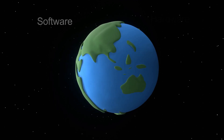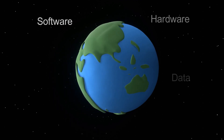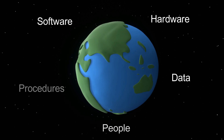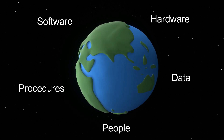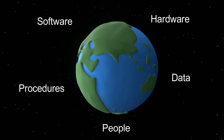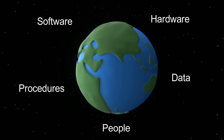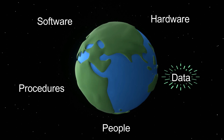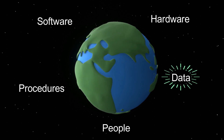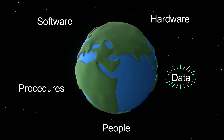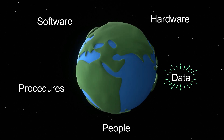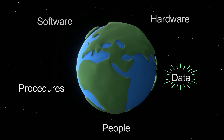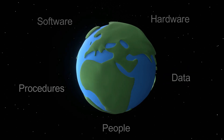Those are software, hardware, data, people, and procedures. Among these five components, the most critical component is data. In all GIS projects, the highest amount of time is consumed by data preparation and its maintenance.